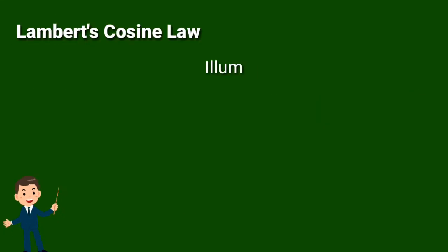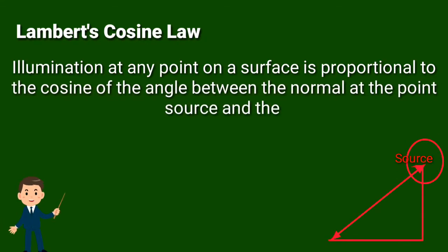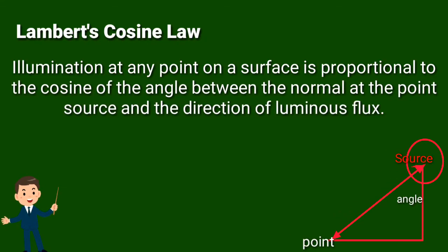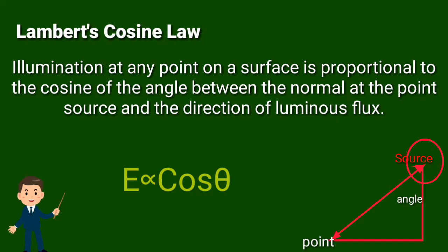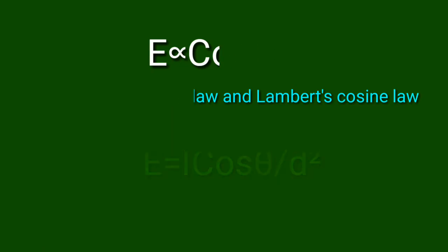Lambert's cosine law: The illumination at any point on a surface is directly proportional to the cosine of the angle between the normal at the point and the direction of luminous flux. The combined law gives E equal to I cos phi by D square.